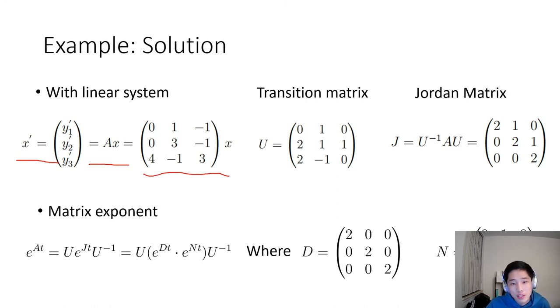Because the matrix A here is non-diagonalizable, we can use some methods such as top-down or bottom-up to construct transition matrix U with generalized eigenvectors. Then the Jordan matrix can be calculated by inverse U by A by U. Next, we can divide J into matrix D and matrix N and calculate matrix exponent E to the AT.